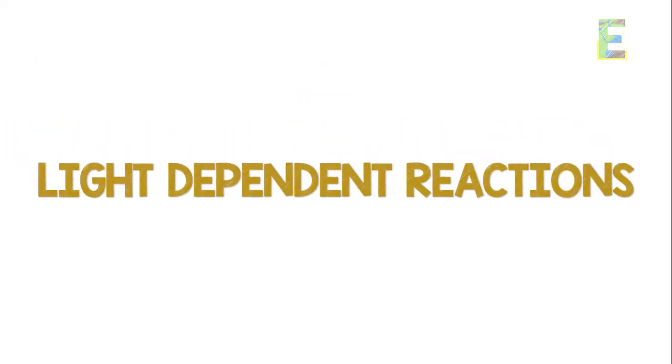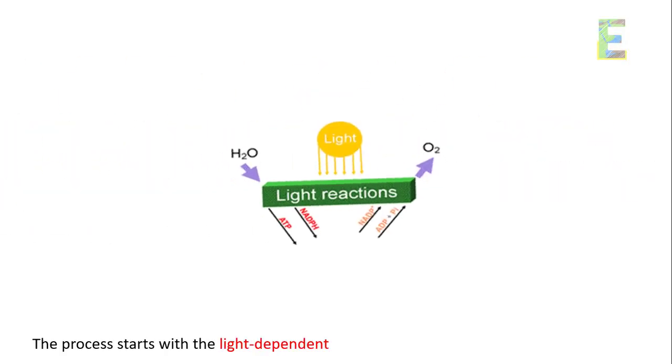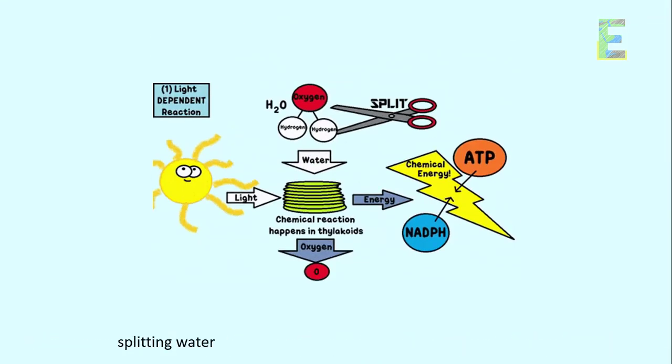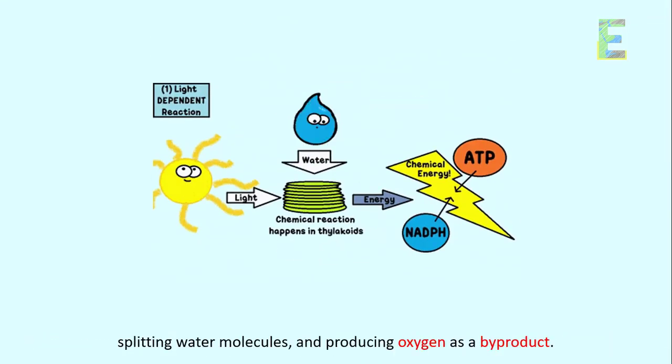Light-dependent reactions. The process starts with the light-dependent reactions. Here, chlorophyll absorbs sunlight, splitting water molecules, and producing oxygen as a byproduct.